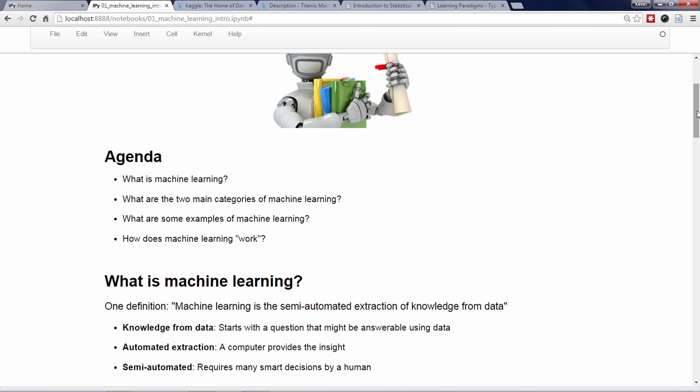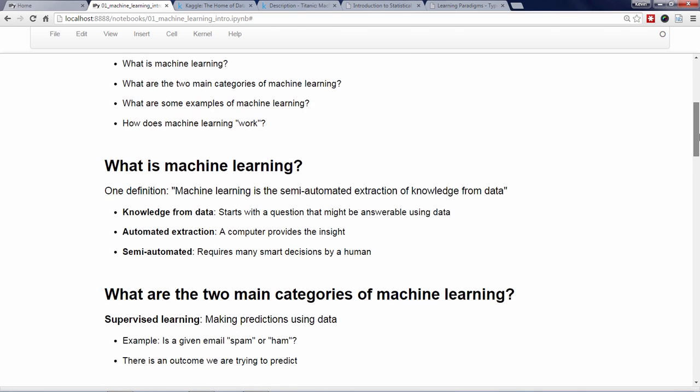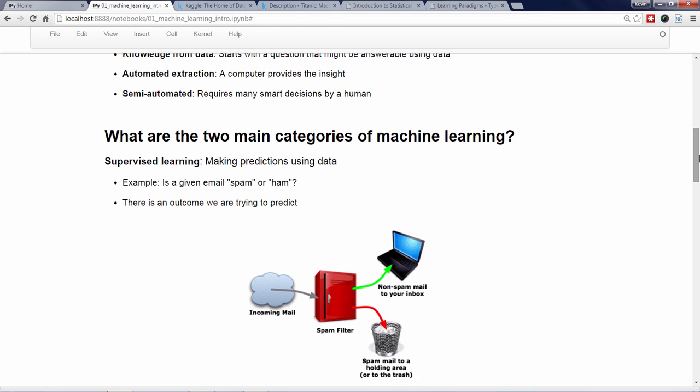Next, let's talk about the two main categories of machine learning, which are supervised learning and unsupervised learning. Supervised learning, also known as predictive modeling, is the process of making predictions using data.